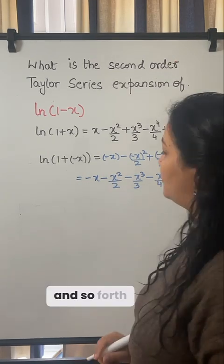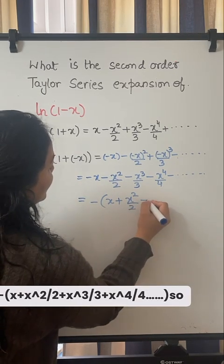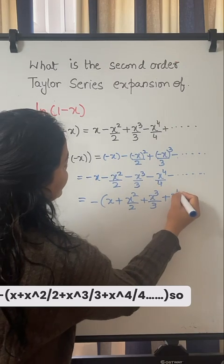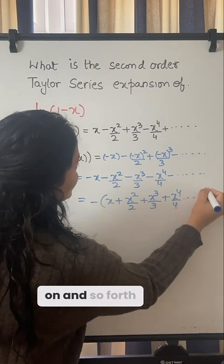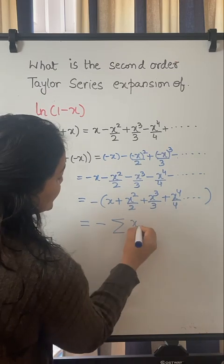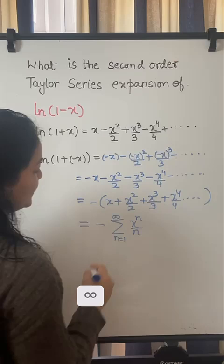I get minus of x plus x squared upon 2 plus x cubed upon 3 plus x to the power 4 upon 4, so on and so forth. So if you observe this is minus of the series x to the power n upon n, n goes from 1 to infinity.